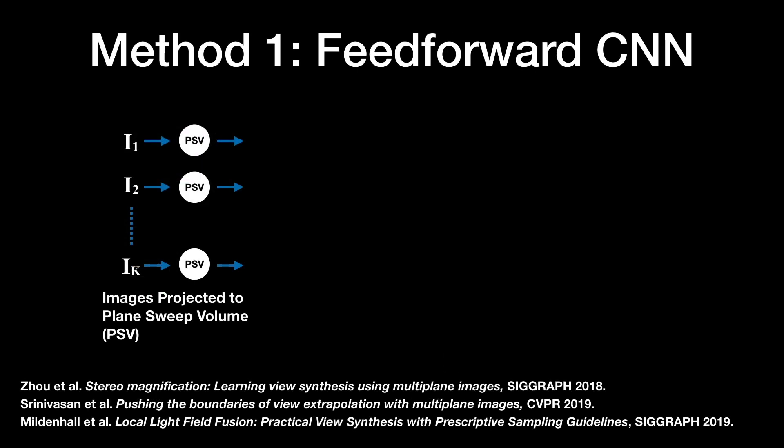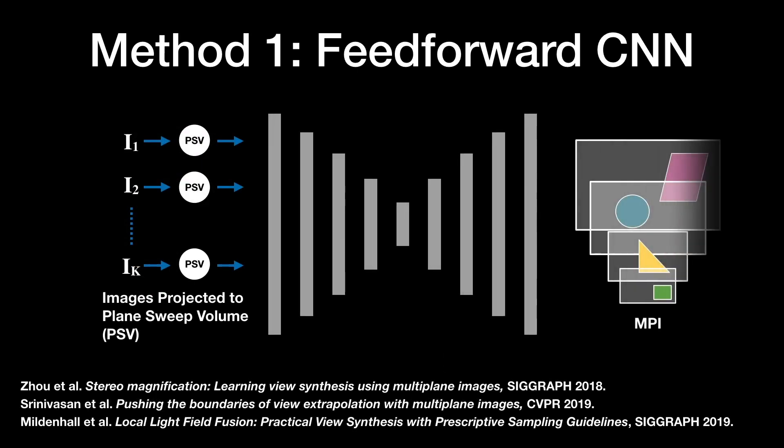Well, one approach is to use a standard feedforward deep network to predict the MPI. In these methods, the images are typically input as plane sweep volumes, allowing the network to more efficiently combine input images at different poses. Such approaches rely on network layers to model the visibility between the input views and the predicted MPI, which can be expensive.